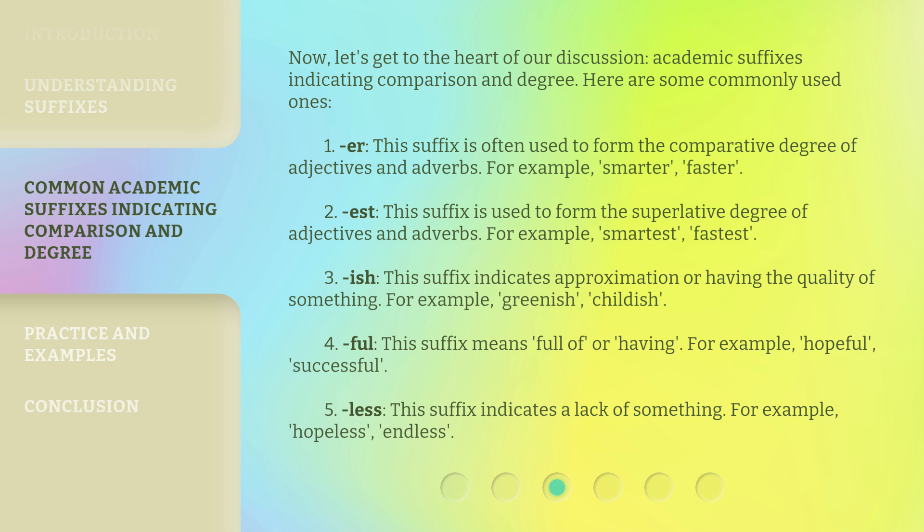1. '-er': This suffix is often used to form the comparative degree of adjectives and adverbs. For example: smarter, faster. 2. '-est': This suffix is used to form the superlative degree of adjectives and adverbs. For example: smartest, fastest.